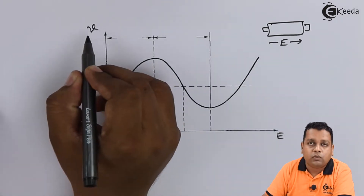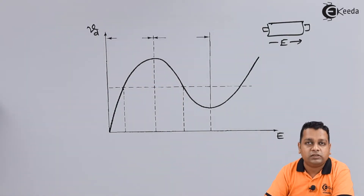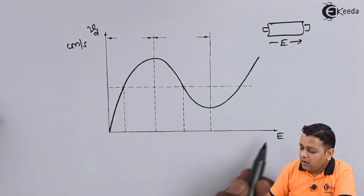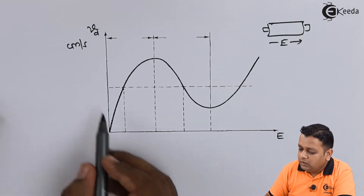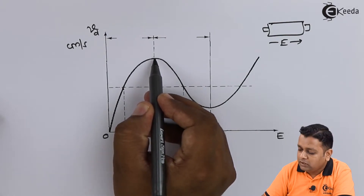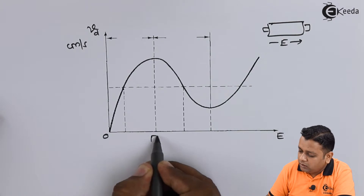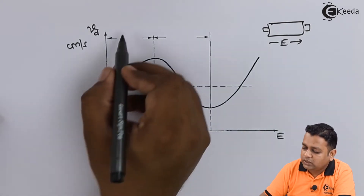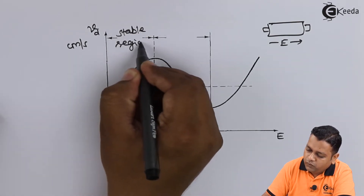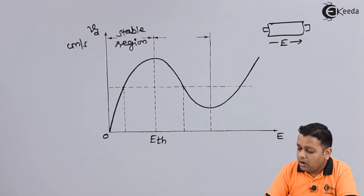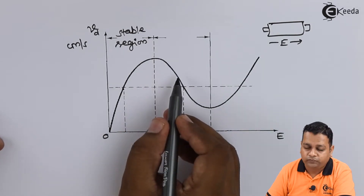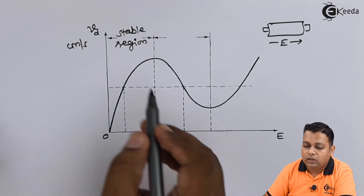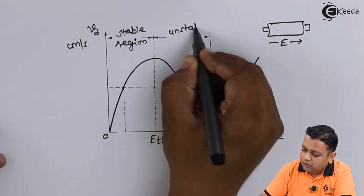The performance is computed in terms of drift velocity, represented as v_d, mostly measured in centimeters per second. As the applied electric field increases, the velocity also increases up to a particular point, and then we observe a drop down. This marks the threshold electric field. Before the threshold field, the behavior is the stable region for the family of transferred electron devices; after crossing the threshold, drift velocity drops down to the valley point — this region is the unstable region.